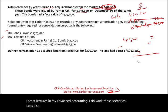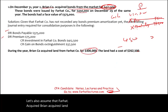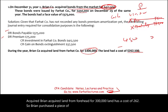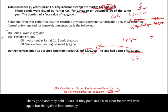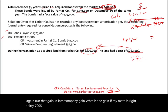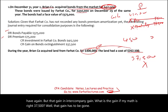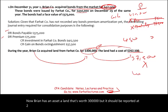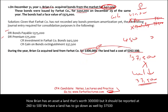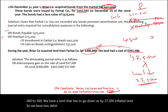For intercompany land: Brian acquired land from Farhat for $300,000; the land had a cost of $262,500 on Farhat's books, giving Farhat an intercompany gain of $37,500. That gain must be eliminated, and Brian's land must be reduced from $300,000 to $262,500. The eliminating entry debits the gain and credits land for $37,500.